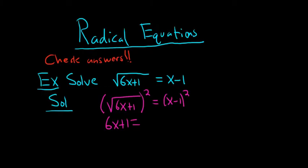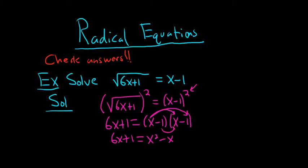And this one, it's x minus 1 squared. So you can just write it twice and distribute. So then we have 6x plus 1 equals, and then we'll FOIL. First, x times x is x squared. And then the outside, x times negative 1 is negative x. Then the inside, so negative x. And the last, negative 1 times negative 1 is positive 1.